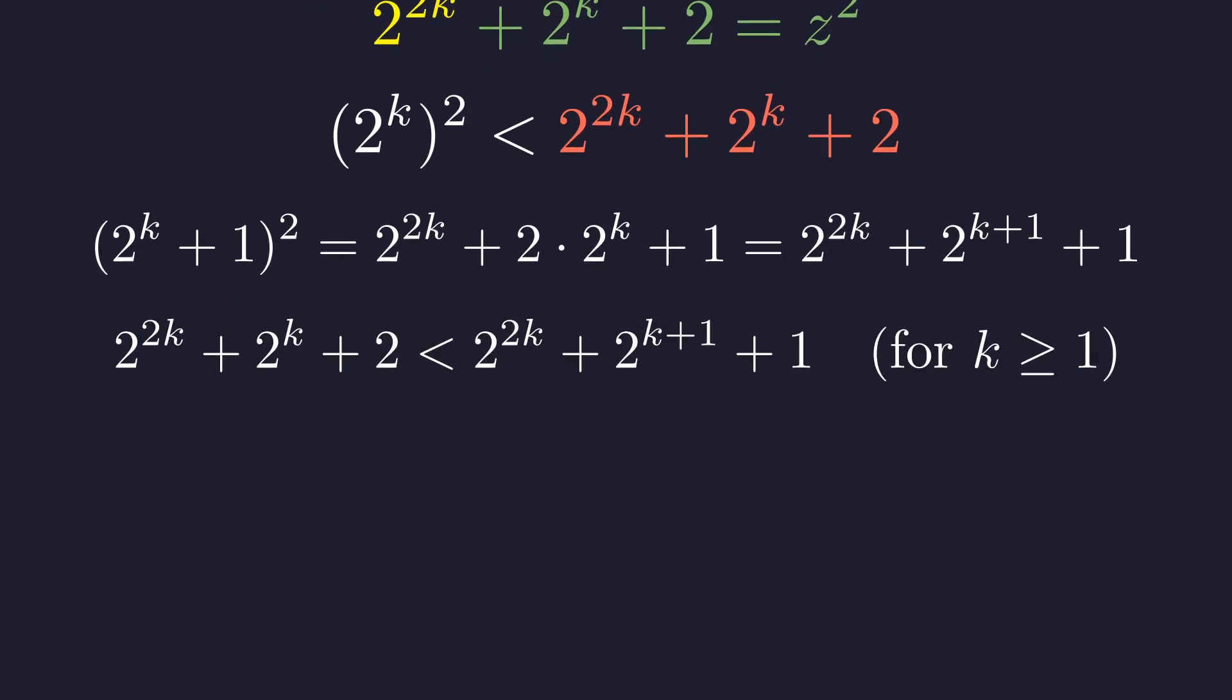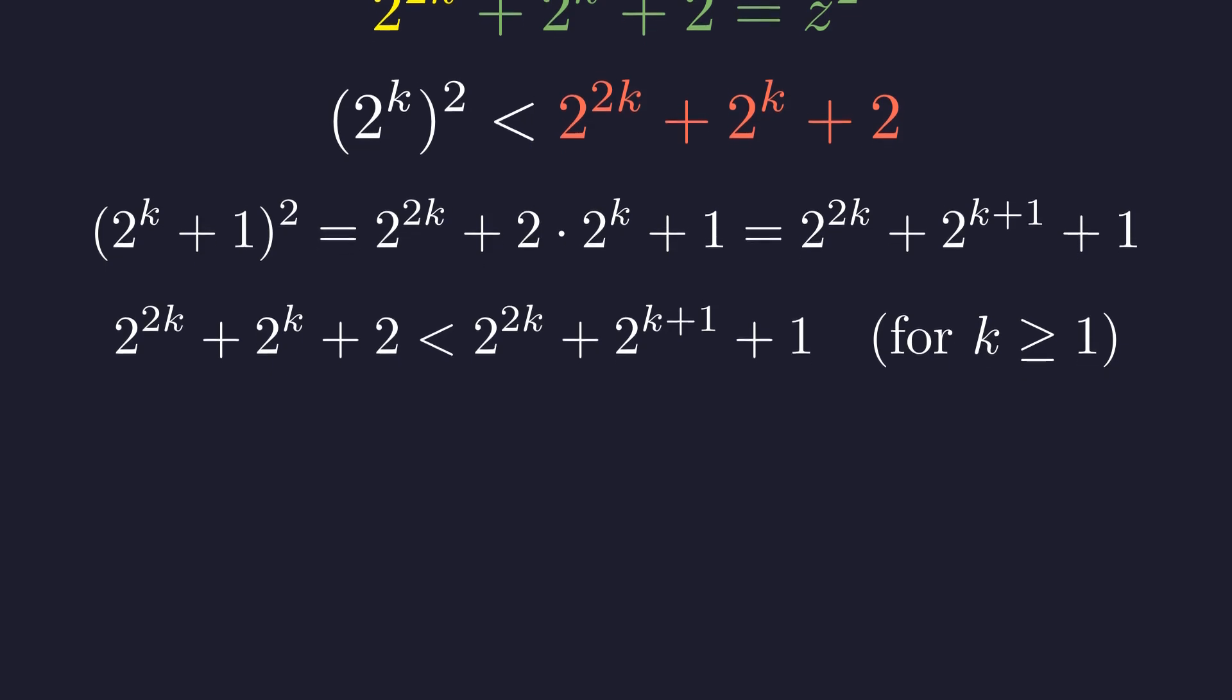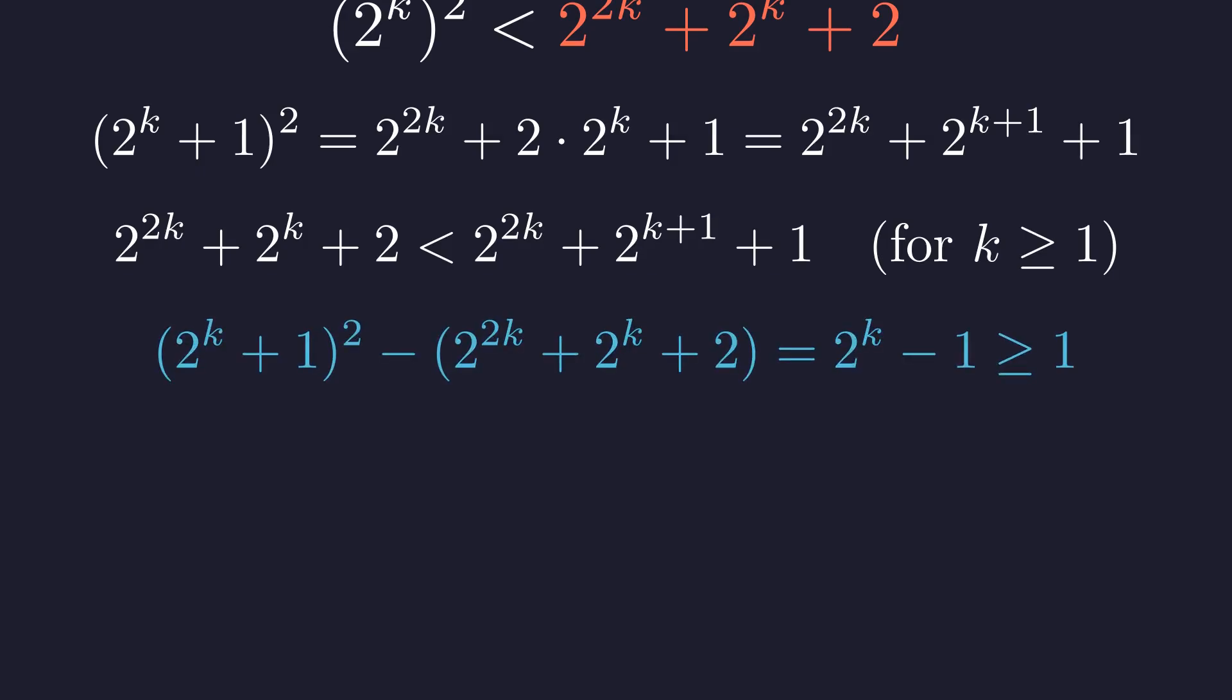Comparing our expression, we can see it's strictly less than this next square, because 2 to the k plus 2 is less than 2 to the k plus 1 plus 1 for any positive k. Let's verify this algebraically. The difference between consecutive squares and our expression is 2 to the k minus 1, which is at least 1 for any positive k.